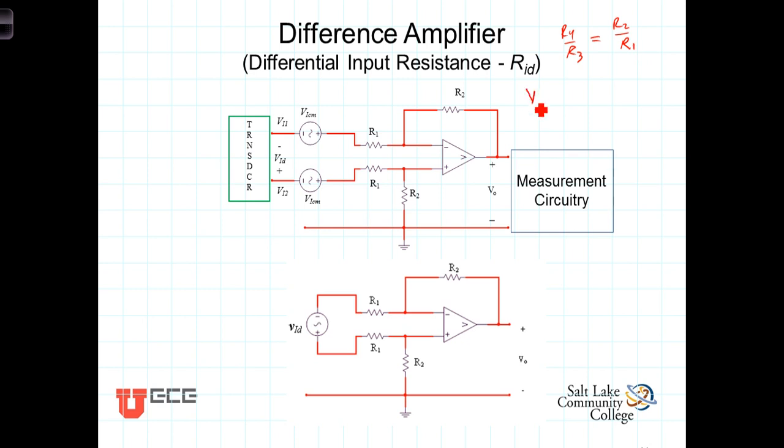the output Vout then became a scaled version R2 over R1 of the actual difference Vi1 minus Vi2.